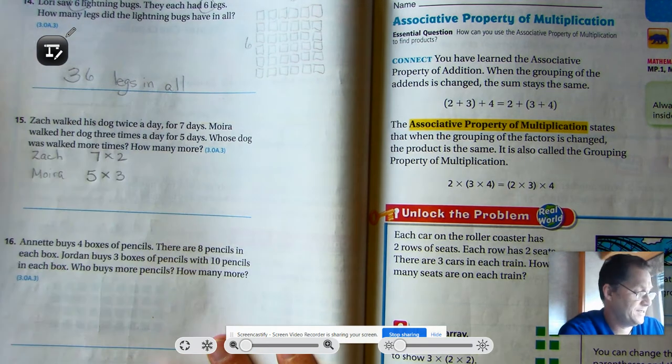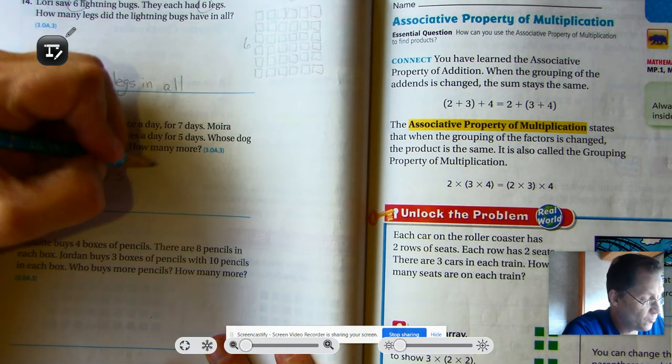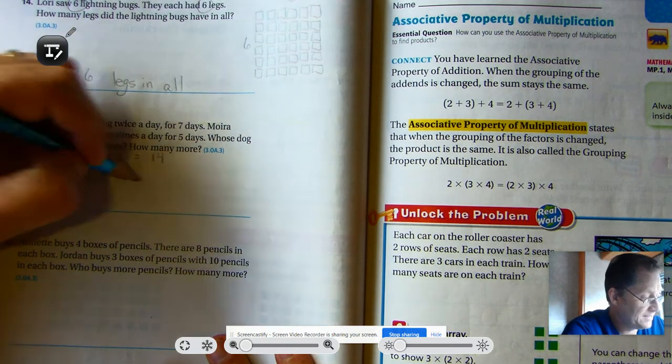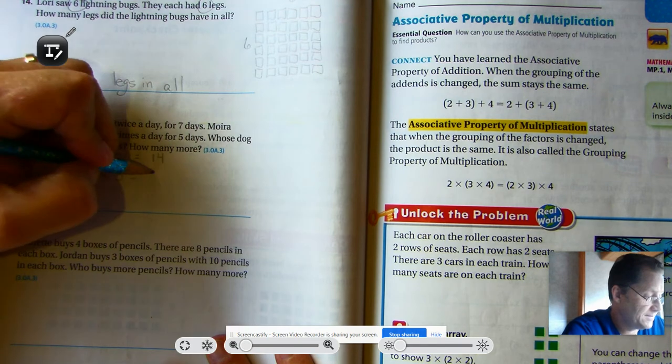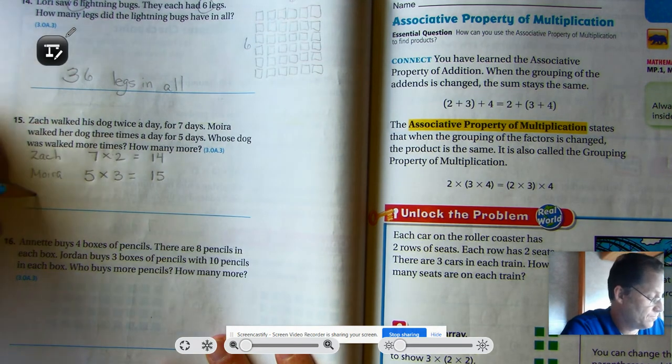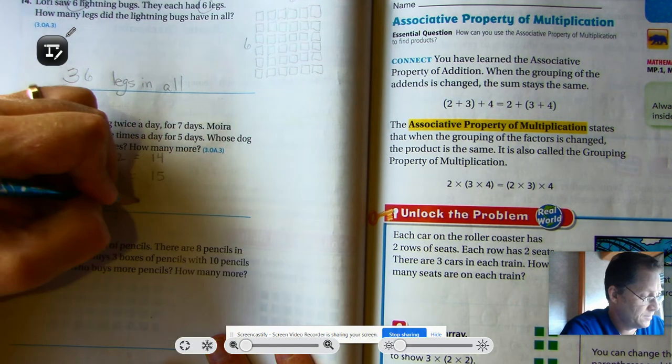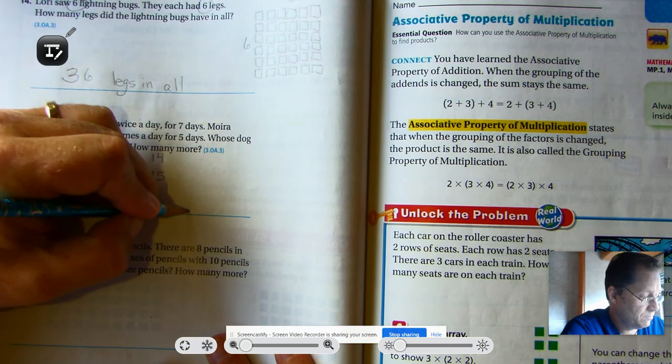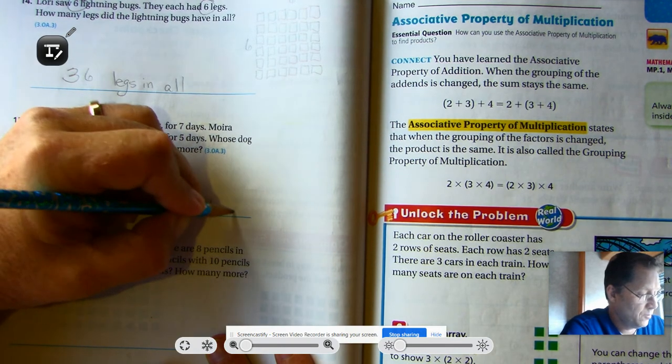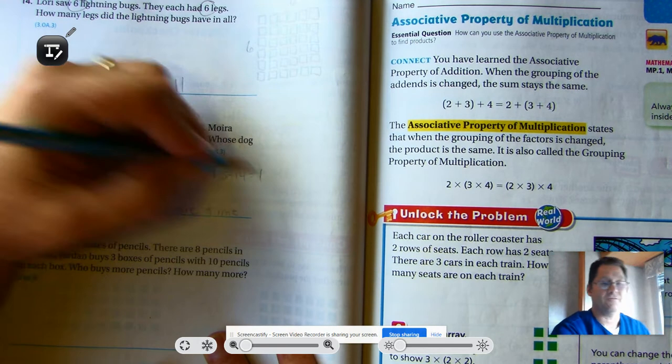So seven sets of two is 14. Five sets of three or three sets of five is 15. So Moira's dog was walked one more time because 15 minus 14 is one.